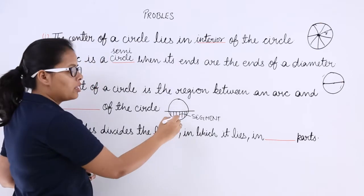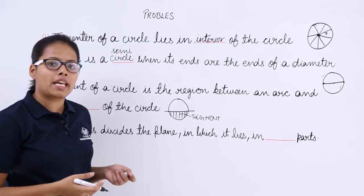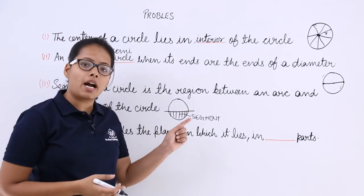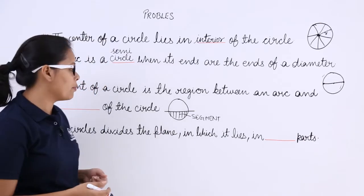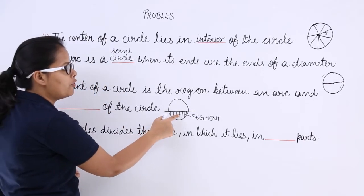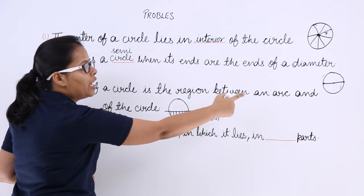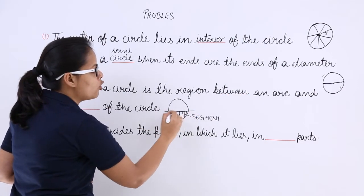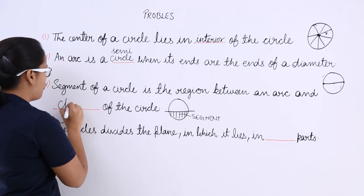If this part is the smaller part, then it will be known as a minor segment. And if it is the larger part, then it will be known as a major segment. So a segment of a circle is the region between an arc and a chord of a circle.